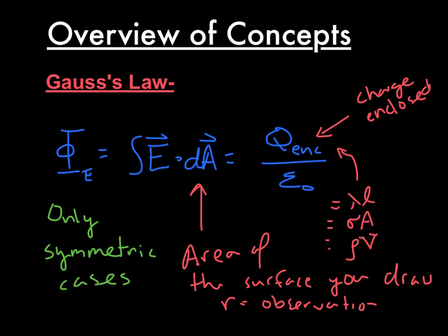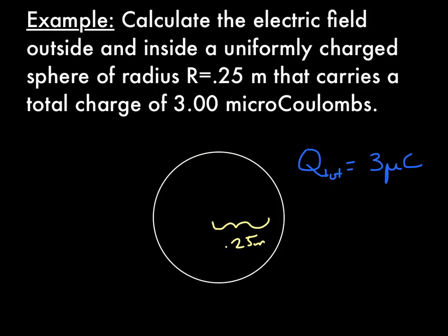So let's look at a couple examples. The first case is to calculate the electric field outside and inside a uniformly charged, when you see uniformly charged, start thinking rho, sphere of radius 0.25 meters that carries a total charge of 3 microcoulombs.